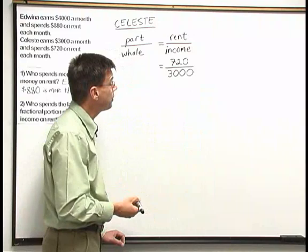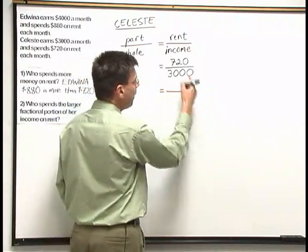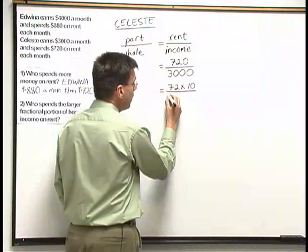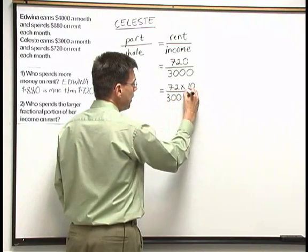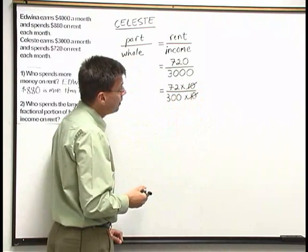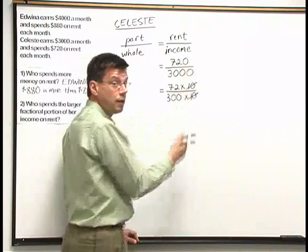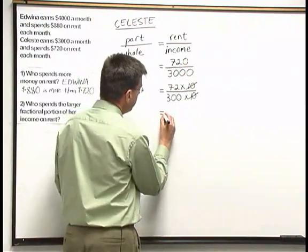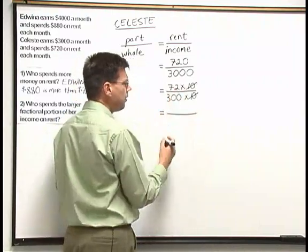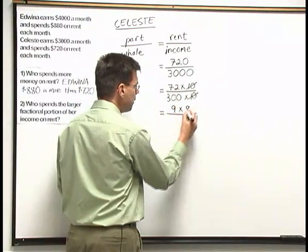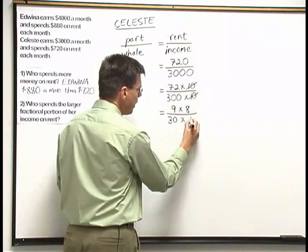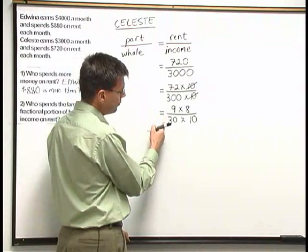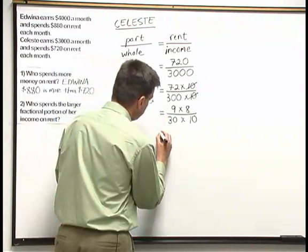Let's go ahead and reduce this fraction to lowest terms. We can write 720 as 72 times 10, and 3,000 as 300 times 10, then cancel the 10 above and below — or just cross out the zeros on the right, which amounts to the same shortcut. Now let's continue to break down the remaining numbers: 72 is 9 times 8, and 300 is 30 times 10. I don't see a cancellation yet, but let's keep breaking down the factors.